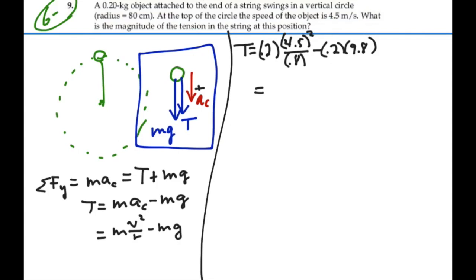So if I do 0.2 times 4.5 squared, divide by 0.8, 5.06, minus 1.96. That gives me a tension of 3.10 newtons.